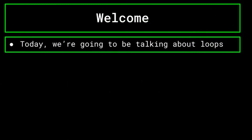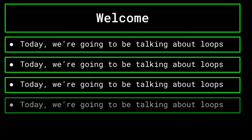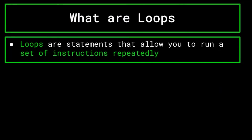Hello everyone and welcome back to an introduction to programming remaster. Today we're going to be talking about loops, we're going to be talking about loops. As you can probably tell by that introduction, a loop in computer science is a statement that allows you to run a set of instructions repeatedly. Loops are one of the foundational types of statements that will be required in almost any program that you write, as they have a variety of uses.